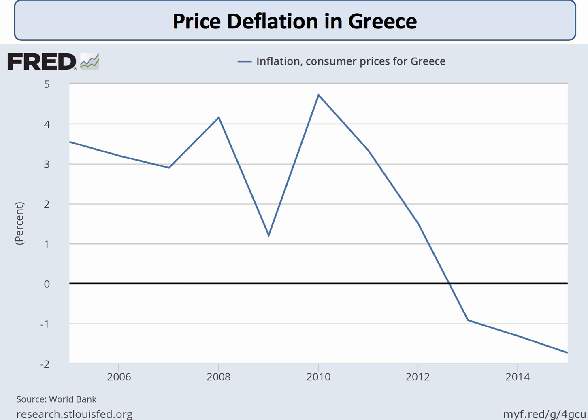You can associate demand-side deflation with countries that have been through the mill in terms of macroeconomics — in particular, those that have effectively been through an economic depression. Greece is a good example of a country that has alternated between low inflation and deflation, with its rate of inflation turning negative in recent years, which will be a quite significant issue going forward.